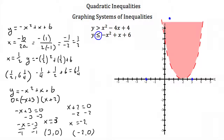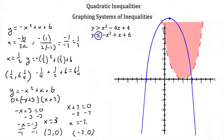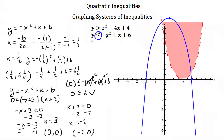Our last step is to test a point on either side of this line. I'll again pick the origin. We plug in 0 for y and 0 for x: 0 needs to be less than or equal to negative 0 squared plus 0 plus 6, which gives 0 less than or equal to 6. That's true, and since the origin is inside the parabola, all points inside the parabola are also solutions. So we shade everything inside this parabola. The solution to this system of inequalities is the overlapping purple region where both shaded areas intersect.